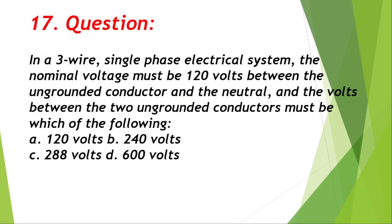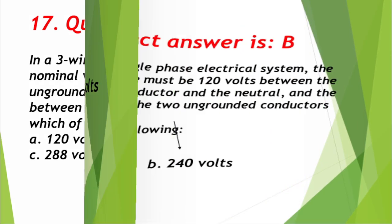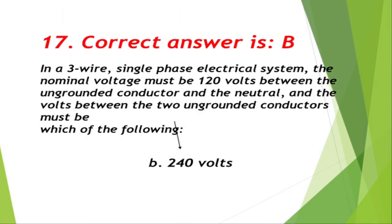Question number 17: In a three-wire single-phase electrical system, the nominal voltage must be 120 volts between the ungrounded conductor and the neutral. The voltage between the two ungrounded conductors must be which of the following? A. 120 volts, B. 240 volts, C. 288 volts, D. 600 volts. Correct answer is B, 240 volts.